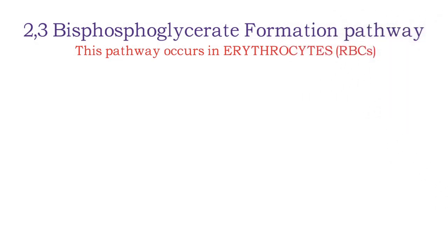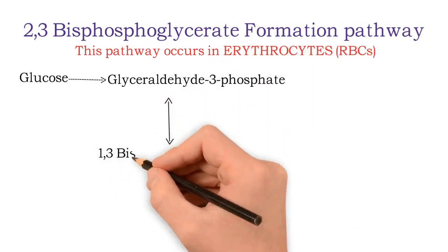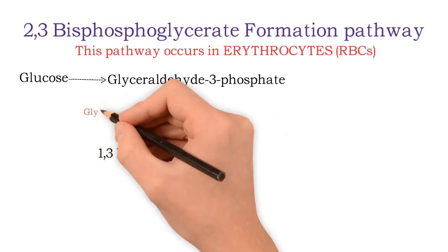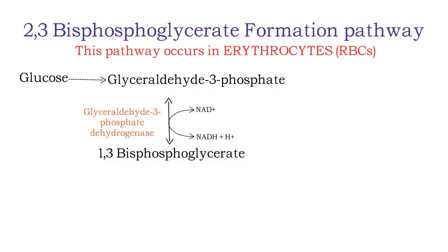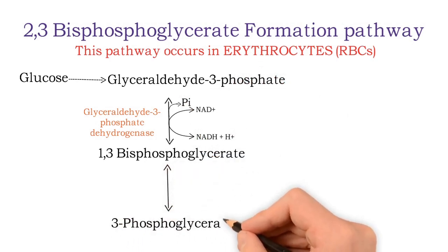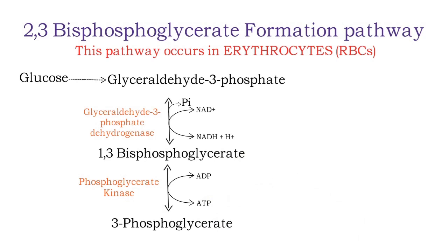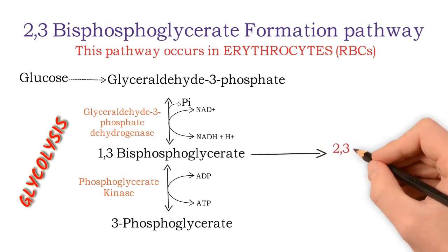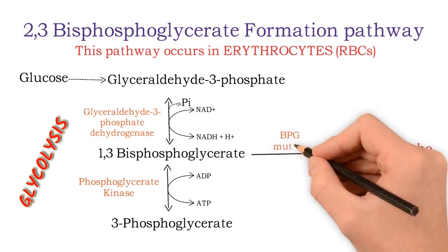The pathway occurs in RBCs. Glucose in the glycolytic pathway is converted into glyceraldehyde-3-phosphate. This is then converted into 1,3-bisphosphoglycerate by glyceraldehyde-3-phosphate dehydrogenase, using NAD and phosphate. Then 1,3-bisphosphoglycerate is converted into 3-phosphoglycerate by phosphoglycerate kinase, with one ATP formed. This is the usual glycolytic pathway. However, in this shunt, 1,3-bisphosphoglycerate is isomerized to 2,3-bisphosphoglycerate by bisphosphoglycerate mutase.